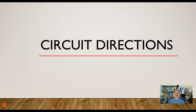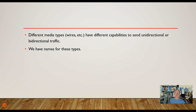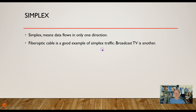Let's talk about the directionality of communication — can it only go one way or can it go both ways? We have three combinations of that. Different media types, different wires, such as coax cable or twisted pair cable, have different capabilities. We have names for three types, and we'll talk about those three types.